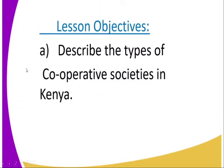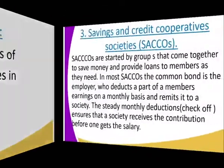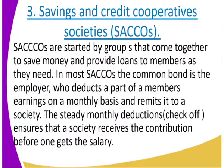Let us look at the lesson objectives. Our lesson objective today is to describe the types of cooperative society in Kenya. In my previous lesson, we were discussing producer cooperatives and consumer cooperatives. Today, I want us to look at the Saving and Credit Cooperative Societies, that is the SACCOs.